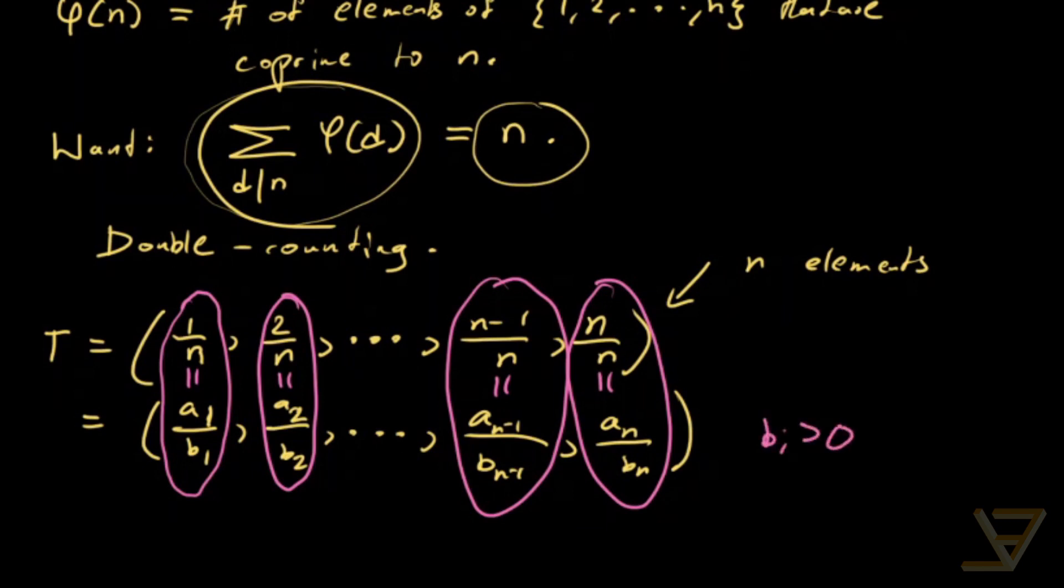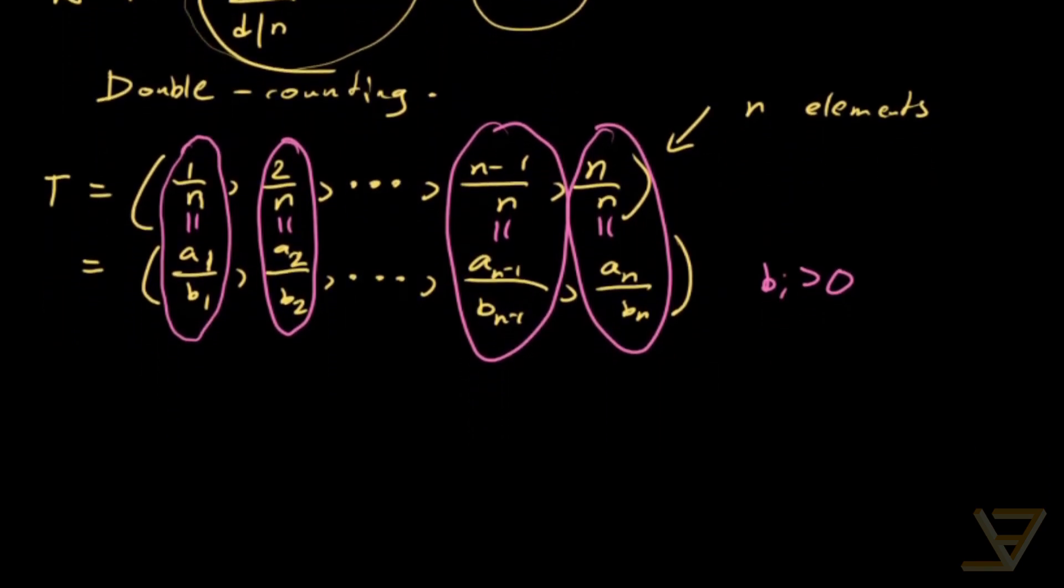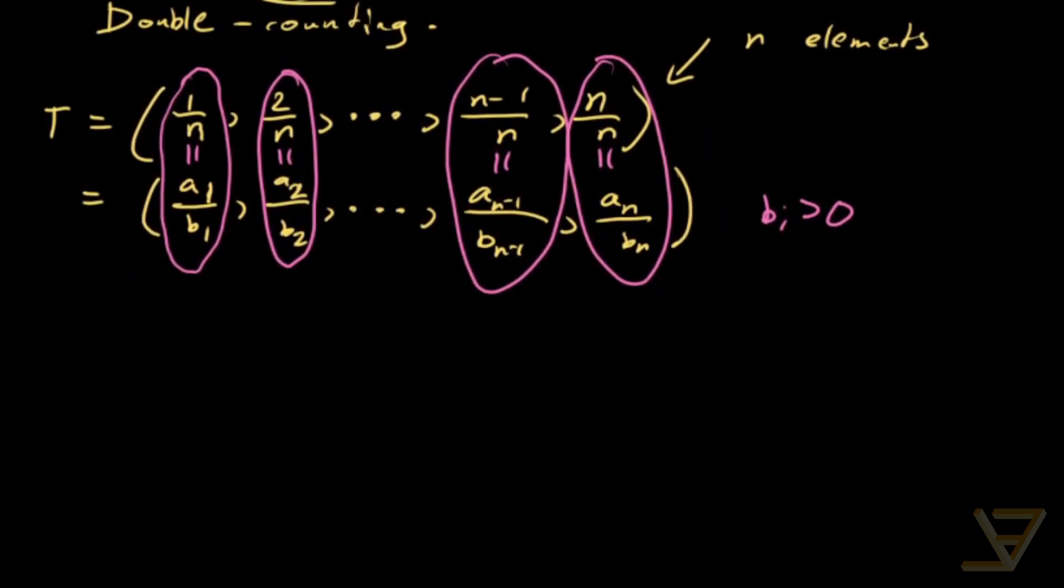And I should note that the bi are all positive. So we're not looking at negative denominators. Here we're looking at positive denominators. Oh, and also just to be clear, by reduced I mean that GCD of ai and bi is equal to 1. So it's the lowest form. In a different video I show that the lowest form exists and in a sense generates all other representations.